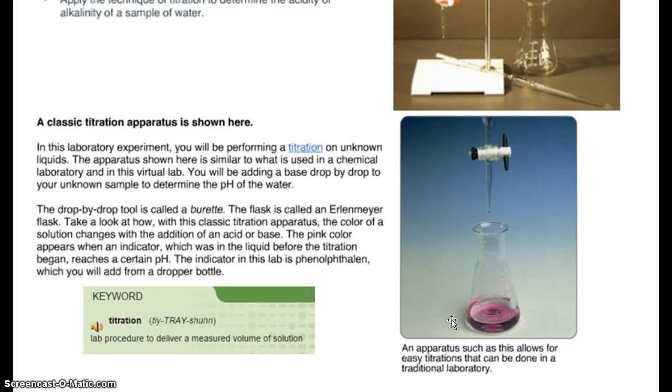The pink color appears when an indicator, which was in the liquid before the titration began, reaches a certain pH and then it changes color. So in here was a solution and some clear indicator called phenolphthalein, right there, phenolphthalein, and they were in there when we started. Then we added one drop at a time of the base, and we kept adding it until we neutralized the solution and then made it a base. When it's a base, it turns pink.